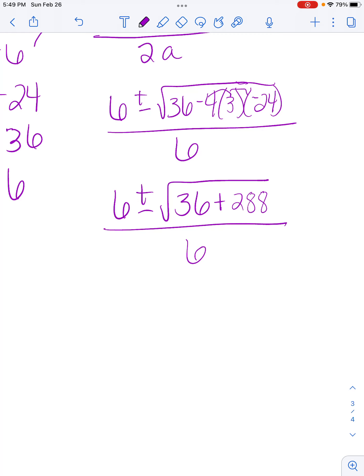Then I'm going to simplify again. And I get 6 plus or minus square root of 324 over 6.